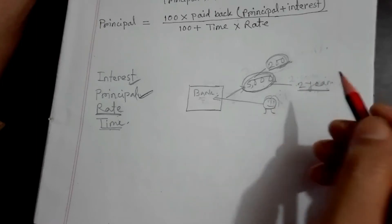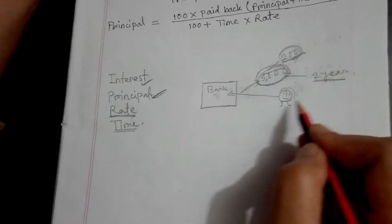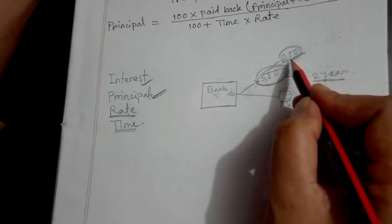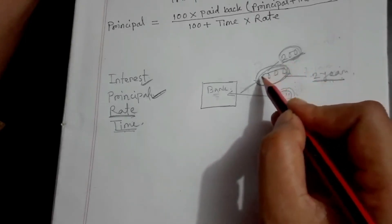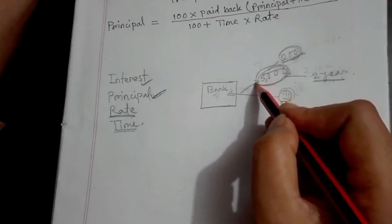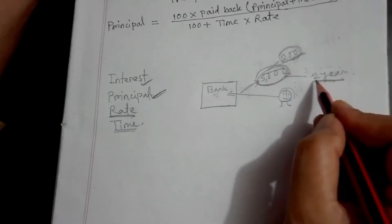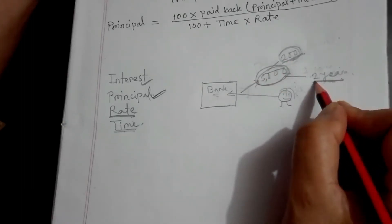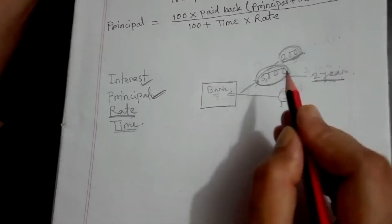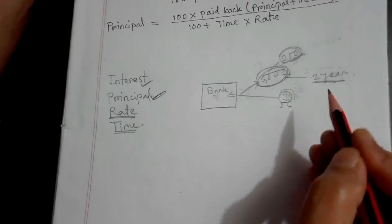So, if we have the concept of principal, total interest, this is the interest, this is the time, and rate — this is the interest, this is the rate.